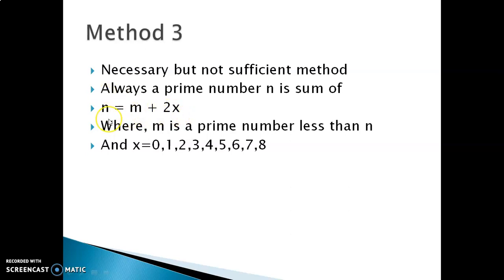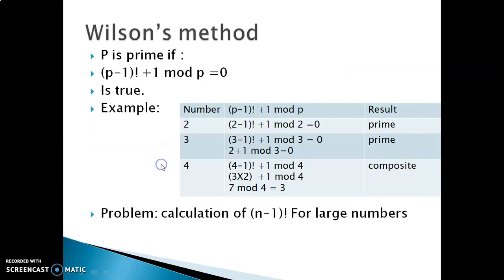Then the fourth method in this video is Wilson's method. In the Wilson's method, he says that if we want to prove that p is a prime number, then first of all find the factorial of p minus 1, and then you add 1 to this result of the factorial, and you modulo it by p. And if the result is 0, that means that the number is prime.